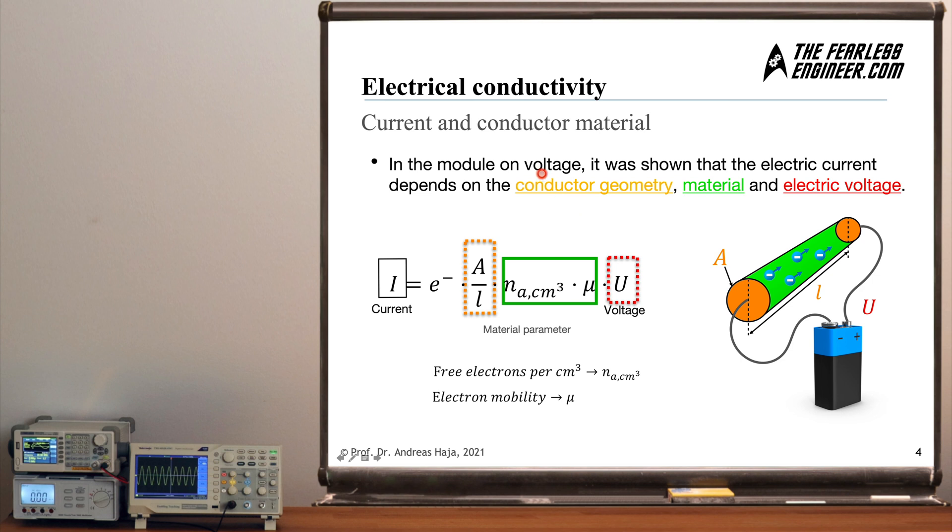Now in the module on voltage we have already seen that the electric current depends on certain parameters which are the conductor geometry, the conductor material, and also the electric voltage which we apply to the poles or the terminals of the respective conductor. And we also came up with this formula here. If you do not know where this formula comes from, I recommend that you watch the associated videos where we talk about the electric current. But just to recap what you can see here, we have the electric current on the left side, we have the voltage of the battery on the right side, and in front of the battery we have those two clusters of parameters.